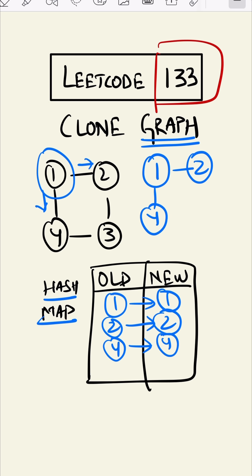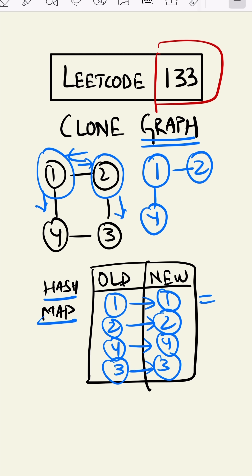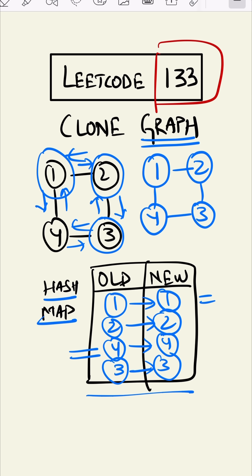From two we check all its neighbors. One is already in our hash map so we won't do anything. The other neighbor is three — three is not there so we add three to our hash map. From three we check its neighbors: four is already in our hash map, so we create a connection but won't add another four node. That is how we make a deep copy — we check every neighbor, see if the value is in the hash map, and create the node accordingly.